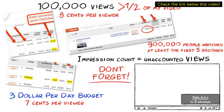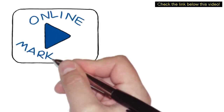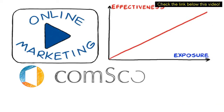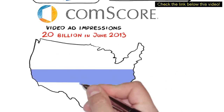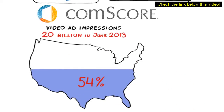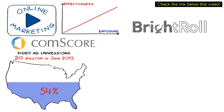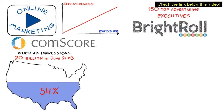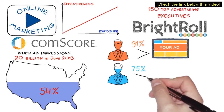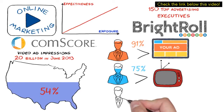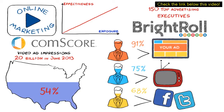I could show you hundreds of case studies like these, but I'm sure you get the point. Online video marketing is effective when it comes to exposure. According to a Comscore report, video ad impressions surpassed 20 billion in June 2013. Video ads reached nearly 54% of the total U.S. population an average of 121 times during the month. In a BrightRoll study surveying 150 top advertising executives, 91% believe online video is equally or more effective than display advertising, 75% believe it is more effective than television, and 68% believe it is more effective than social media. In short, online video advertising is growing many times faster than TV, search, and most other digital markets. If you don't have this secret traffic source in your arsenal, you are simply being left behind.